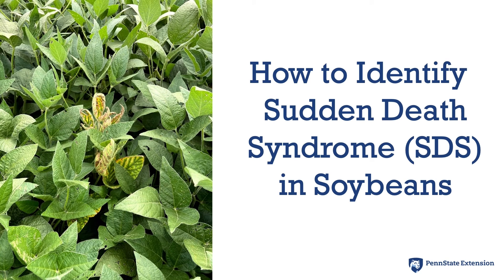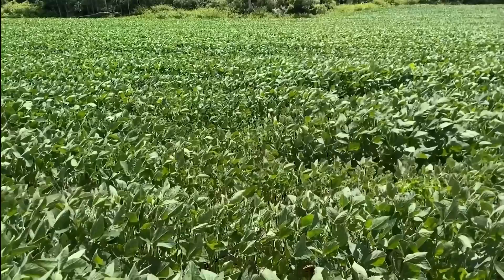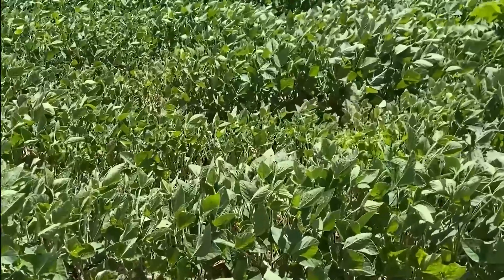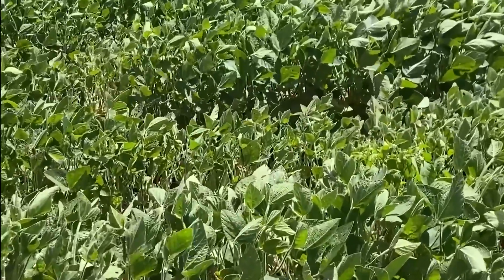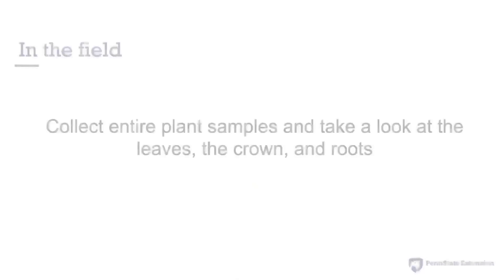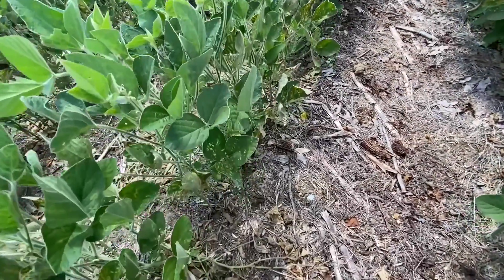Here is how you can identify SDS. In the field, look for uneven spots. As symptoms progress, these spots will look yellow and brown. Collect plants and examine the leaves, the crown, and the roots.